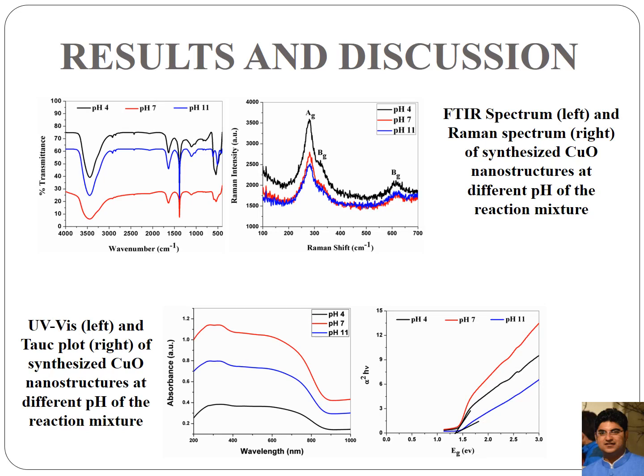Raman spectroscopy of the sample was also done. We can see three peaks: Ag, Bg and Bg — that is two Bg peaks and one Ag peak. These peaks are the characteristic Raman peaks of copper oxide nanostructures. Thus the formation of copper oxide was confirmed.